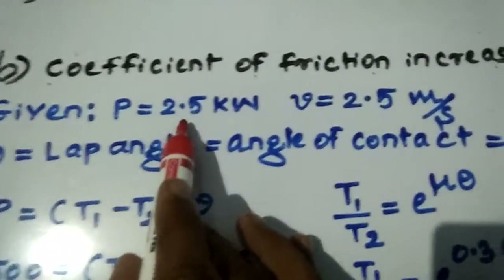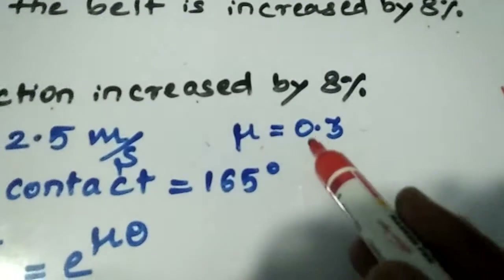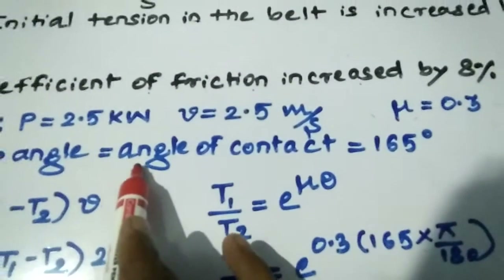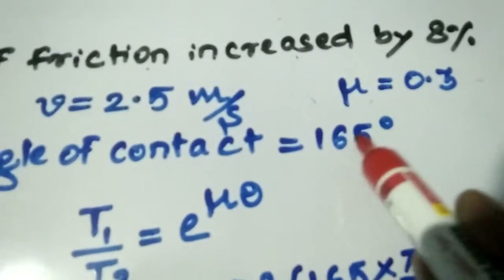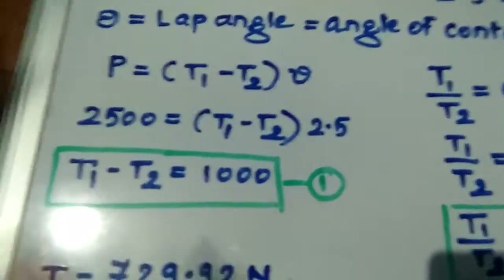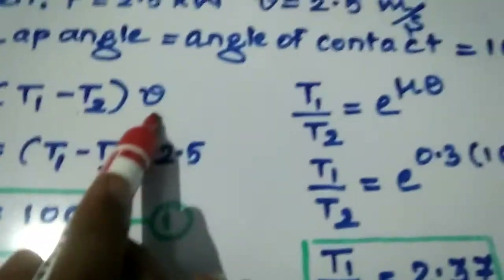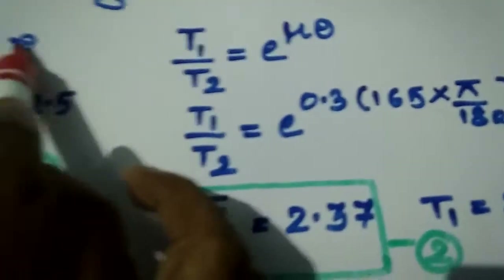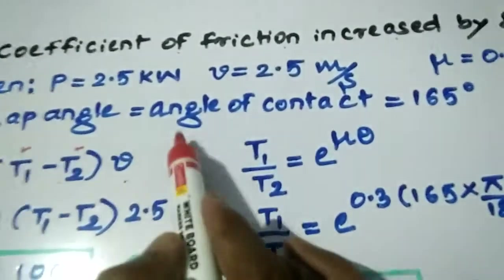The given data: power is 2.5 kilowatt, velocity is 2.5 meter per second, coefficient of friction is 0.3, and theta — the lap angle, also called angle of contact — is 165 degrees. To solve this, you need two formulas: P equal to T1 minus T2 into velocity, and T1 by T2 equal to e raised to mu theta. With two equations and two unknowns, we can determine T1 and T2 easily.